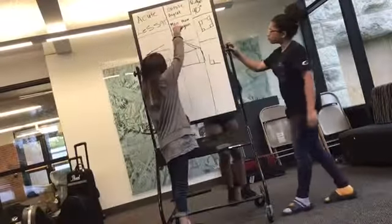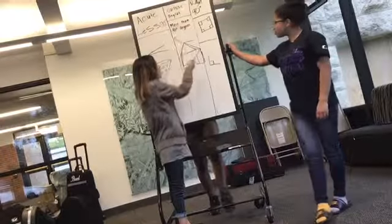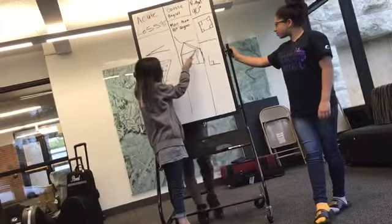I'm doing the obtuse angles. Obtuse angles are more than 90 degrees, and this is a house right there for an obtuse angle.